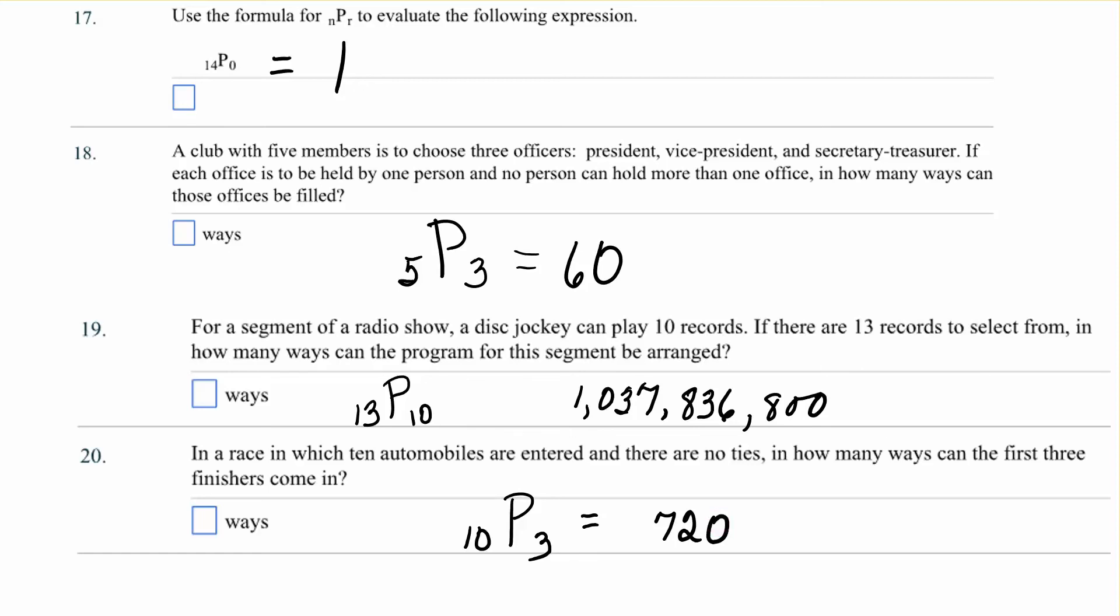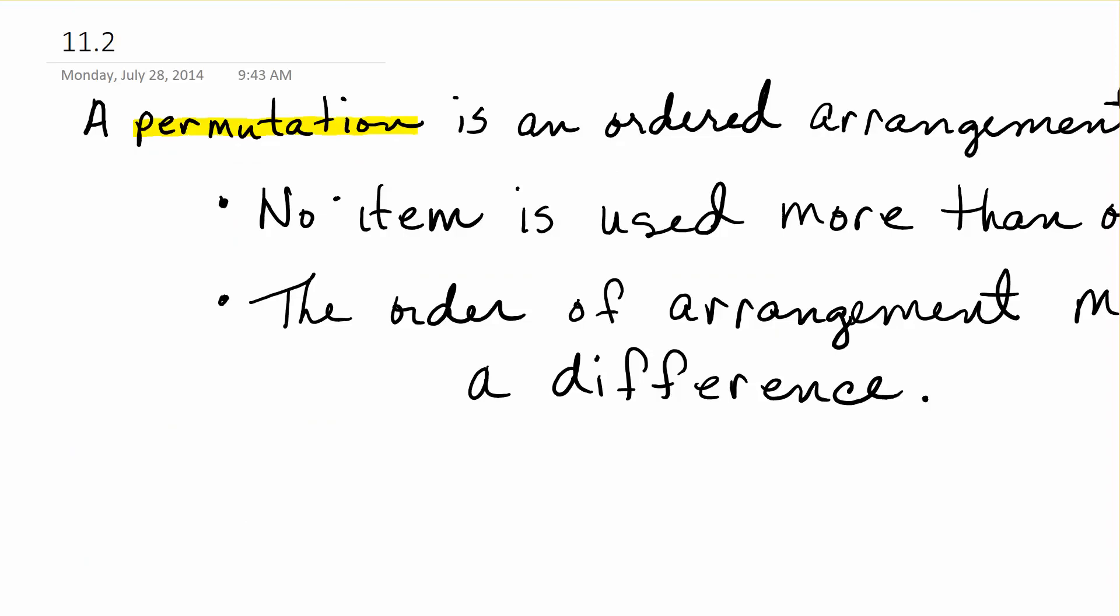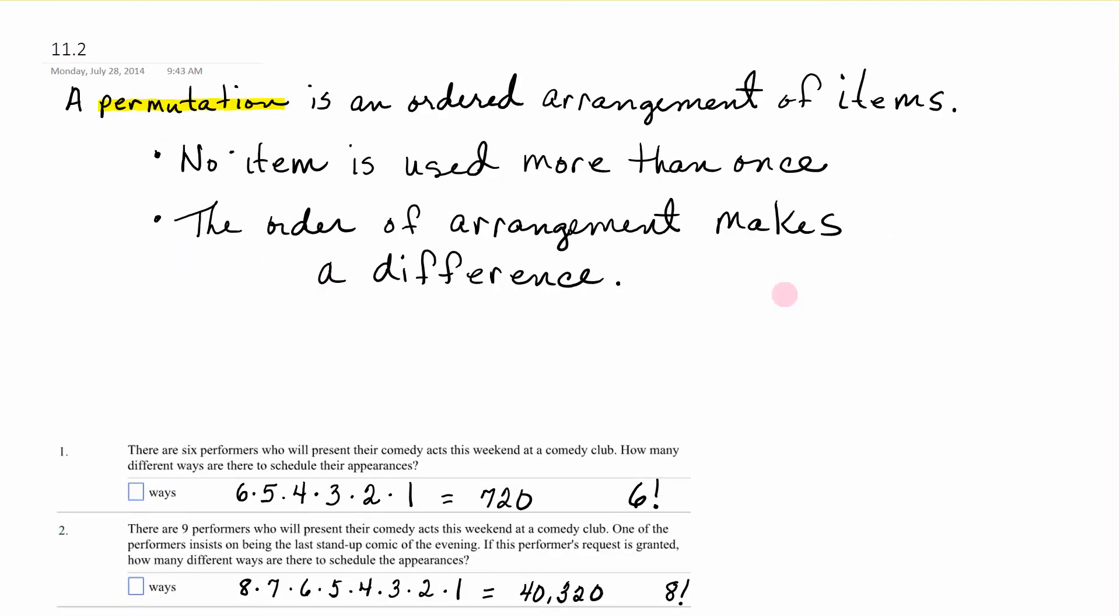All right. So permutations. I want to go all the way back. It is an ordered arrangement of items. No item can be used more than once. And the order of the arrangement makes a difference. When that's the situation, you're using a permutation. And we have formulas for N items taken R at a time.